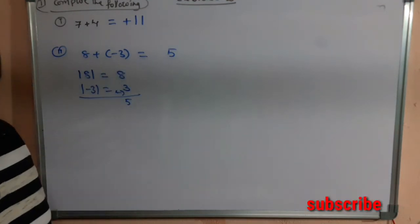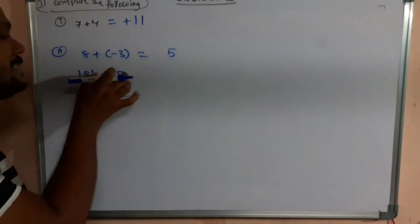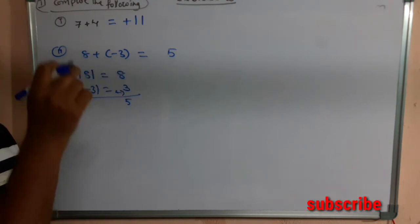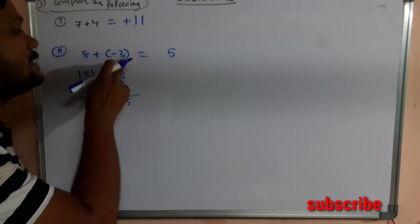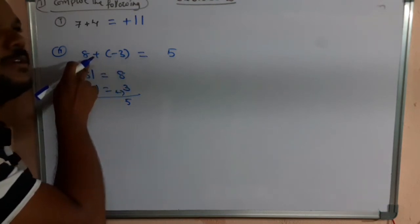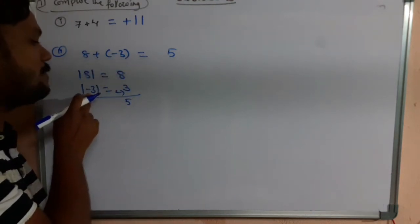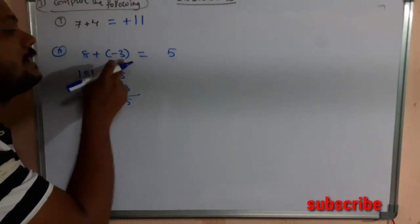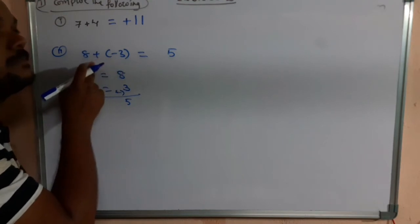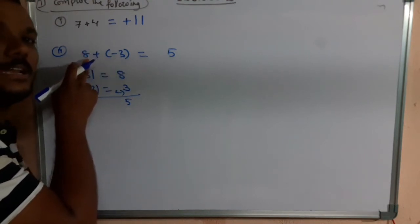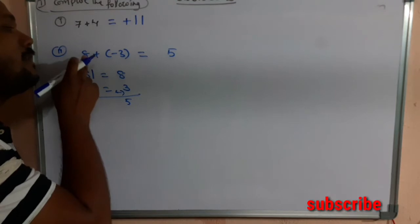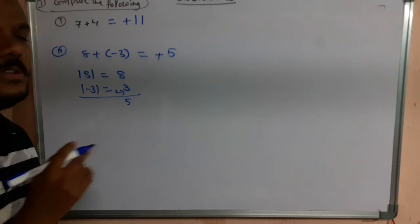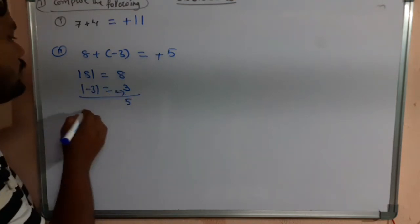Now, whether the answer is positive or negative depends on which integer has the greater absolute value. The absolute value of 8 is 8 and the absolute value of -3 is 3. Since 8 has the greater absolute value, and 8 is positive, the answer is also positive: +5.